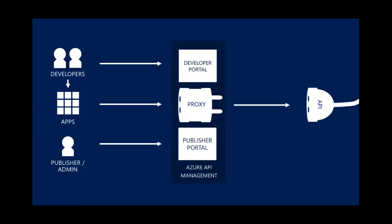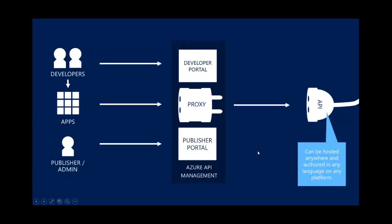The proxy is where the magic happens. The proxy can change the call — it can do XML to JSON conversion, it collects analytics, it can rate limit, it can implement all of the policies that are the magic that is API management. The API can be hosted anywhere: on premises, on a rival cloud like Amazon or Rackspace. It really doesn't matter. Obviously we love it if you host it on Azure, but it's not a requirement. It also can be written in any language: .NET, PHP, Node.js — we don't care. As long as it speaks HTTP, we are good to go.